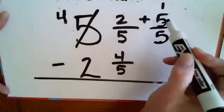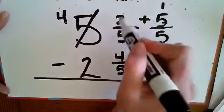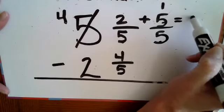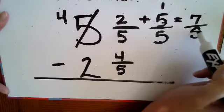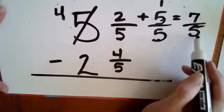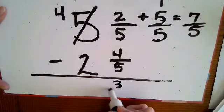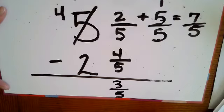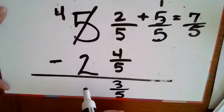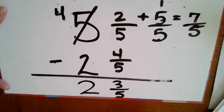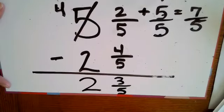That's the whole that I brought over. I add that five fifths to what was already there to get seven fifths. And then I know seven fifths take away four fifths is three fifths. Four take away two or subtract two is two. Two and three fifths.